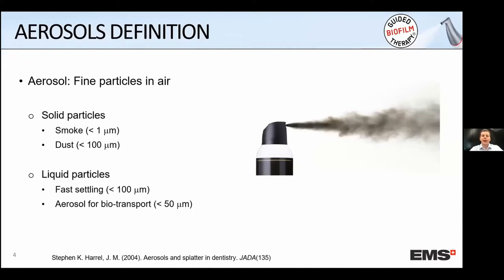These fine particles can be either solid particles or liquid particles. If we go to solid particles in air, we distinguish two categories. First is smoke — if you have a cigarette, you create smoke, which is composed of micro or nano particles mainly below one micron. These particles spray into the air and stay in the air. But when we speak about bigger particles, up to 100 microns, we speak more about dust. A dust will settle down over time. Particles much bigger than 100 microns do not create dust because they settle down very quickly.